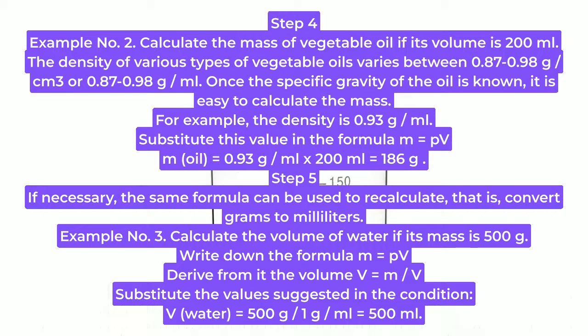Step 5: If necessary, the same formula can be used to recalculate, that is, convert grams to milliliters. Example 3: Calculate the volume of water if its mass is 500 g. Write down the formula m = pV. Derive from it the volume: V = m/p.